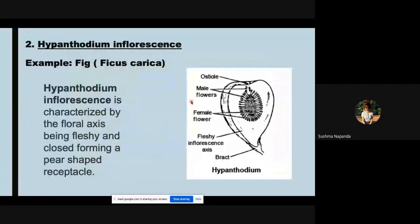Next we have hypanthodium inflorescence. An example is fig, Ficus carica is the scientific name. Hypanthodium inflorescence is categorized by the floral axis being fleshy and enclosed, forming a pear-shaped receptacle. As you can see here it is pear-shaped. This is the ostiole, that is the opening. Towards the ostiole we have the male flowers.